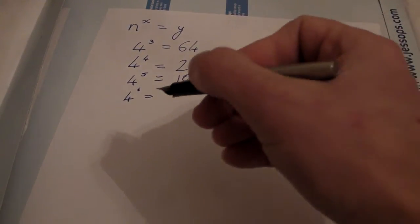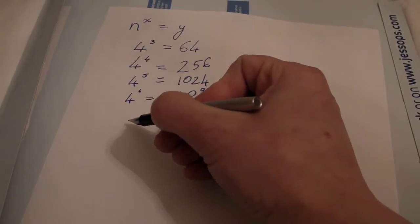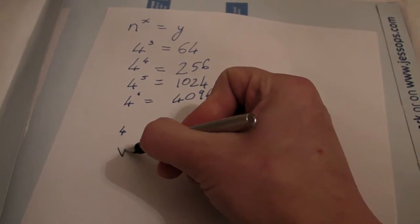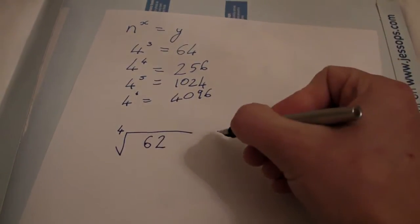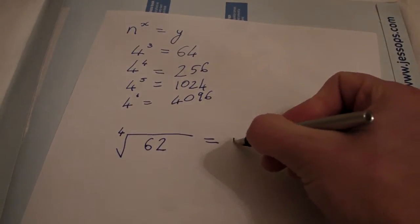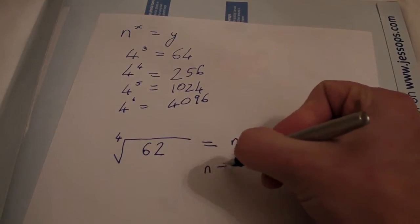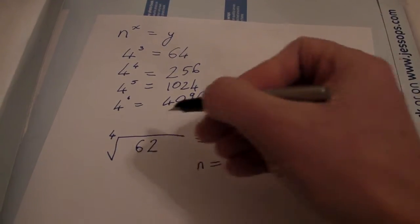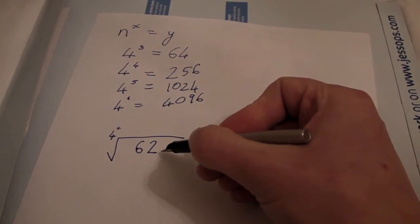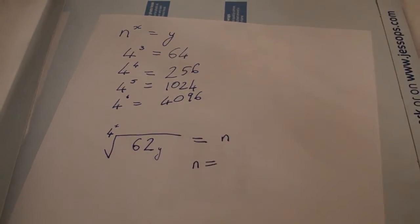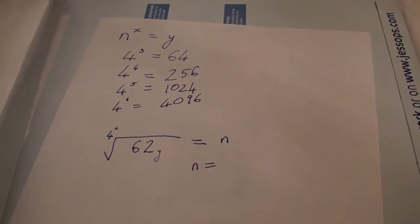We can also use it the other way. So if we want to find out the nth root of something, say for example, the 4th root of 62, we can work backwards. That's our x. That's our power. That's our y. Our finished product, isn't it? So we want to work backwards from there.